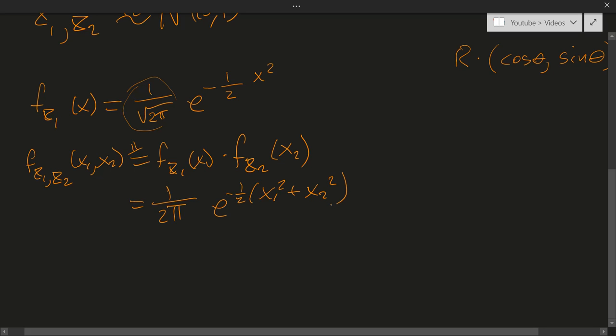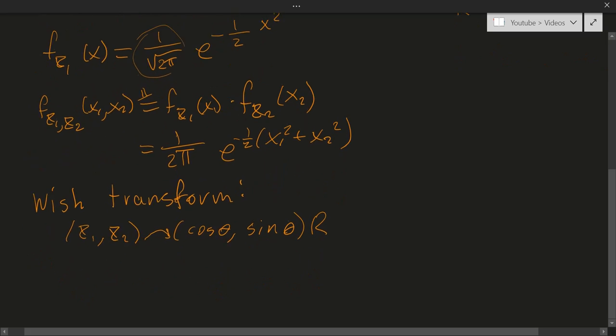Okay, this is the joint density, but now we wish to make some kind of transformation. So we want to consider x1, x2 equal to r times cosine of theta, sine of theta, and instead of an equality, I will write an arrow, and we have some function taking us over here.